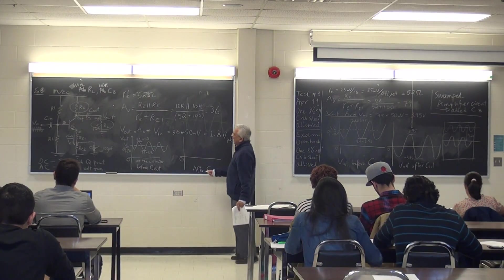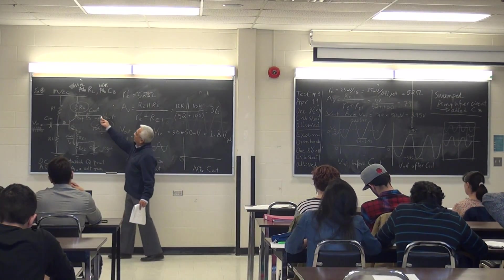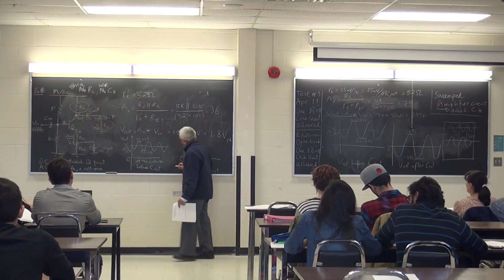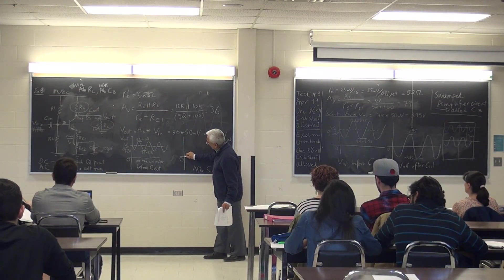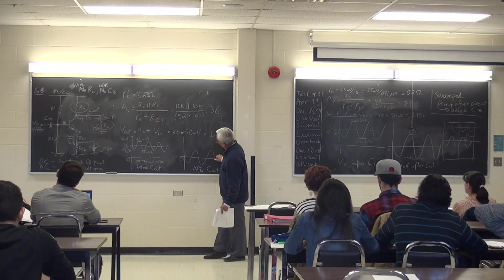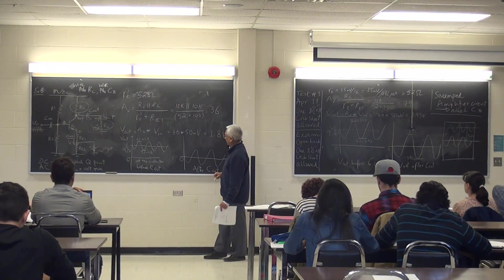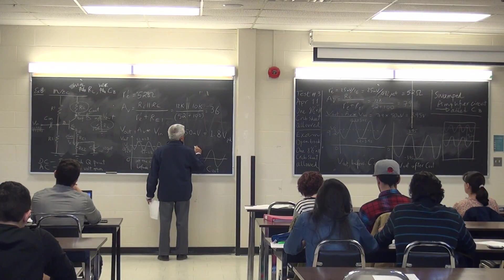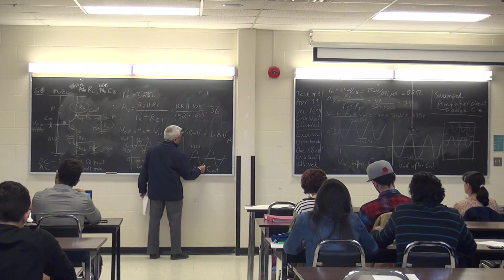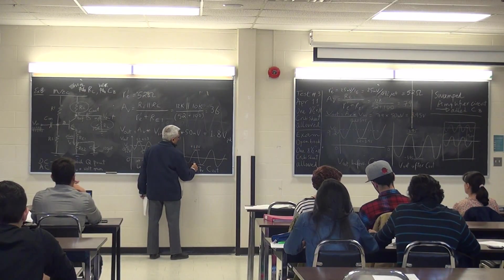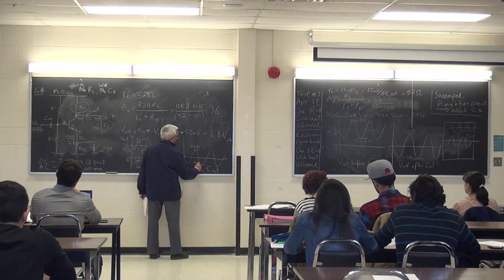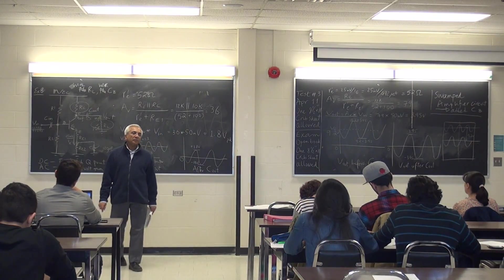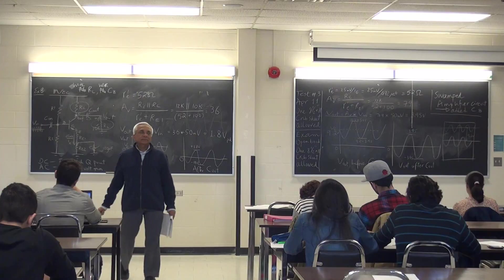After C out, here, because of the capacitor, the DC is blocked. And all I see there on a scope, so that's 1.8 plus and 1.8 minus.